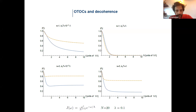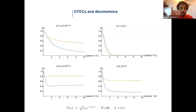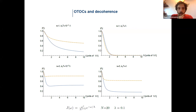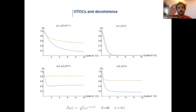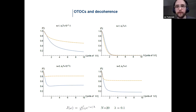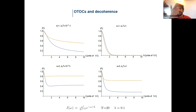Another question: the OTOC is strongly linked to the Loschmidt echo of the dynamics you are implementing. Given that you see different behaviors of this function when you reverse or do not reverse the dynamics, have you explored implications for the Tasaki-Crooks theorem and the breakdown of micro-reversibility? No, I have not tried that yet, but it seems interesting — we can discuss it further.